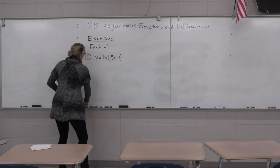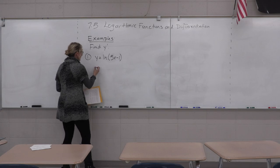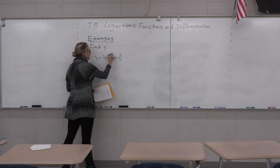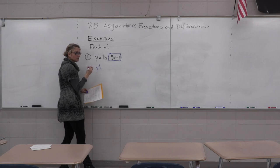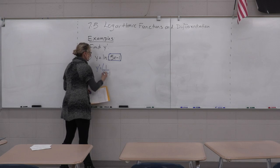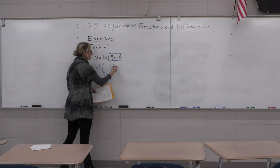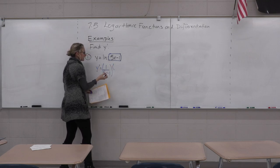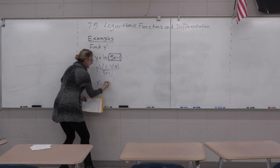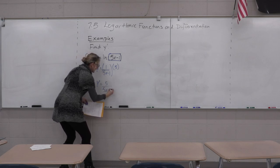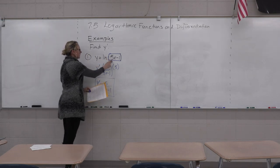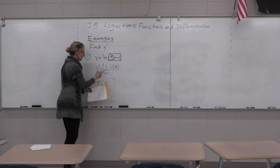Number one: y equals the natural log of the quantity five x minus one. The derivative rule for natural log of a function of x is one over the inside times the derivative of the inside. The derivative of the inside is five, so y prime equals five divided by five x minus one.